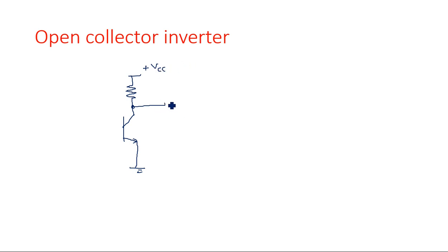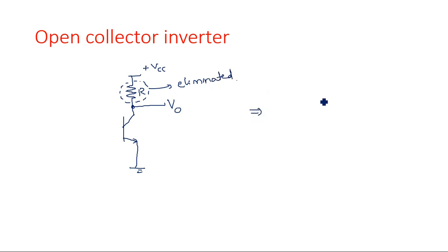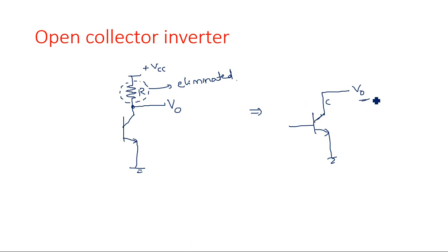When this resistor is not used — if it is eliminated from the circuit — the circuit will have an open collector. Open collector means there is no other component connected at the collector of the transistor. Whatever changes are made at the input will change the behavior of the transistor, turning it on or off, and the output will change accordingly.